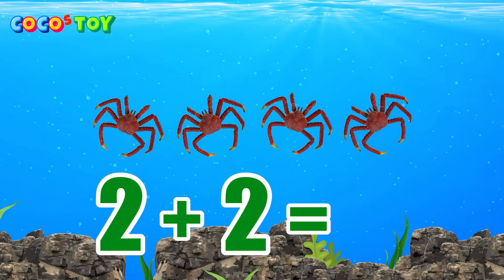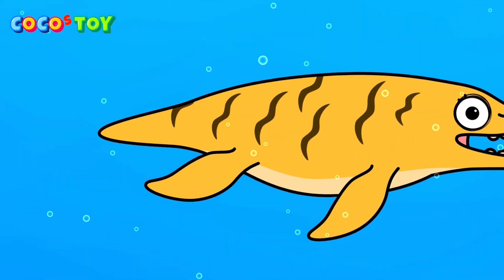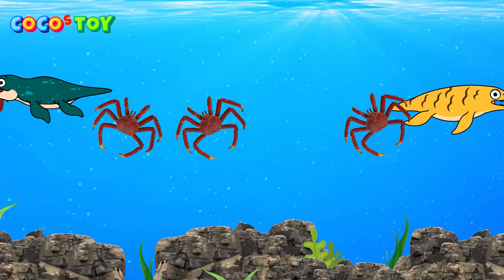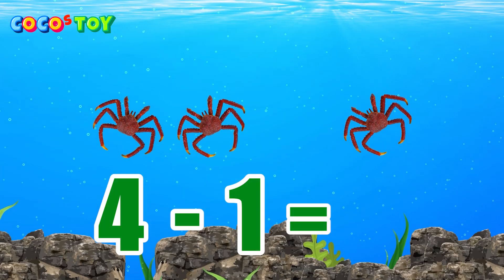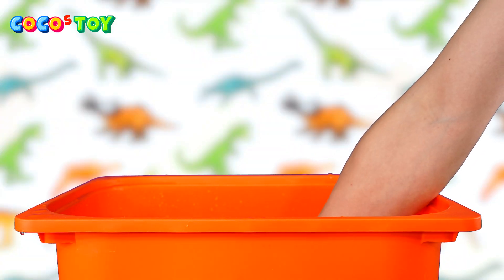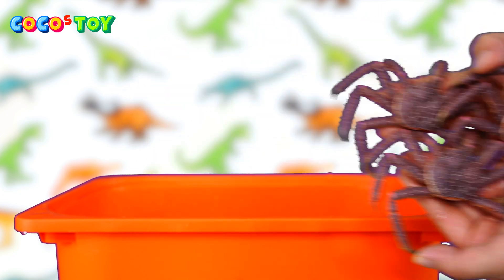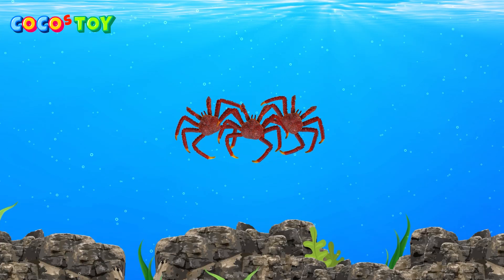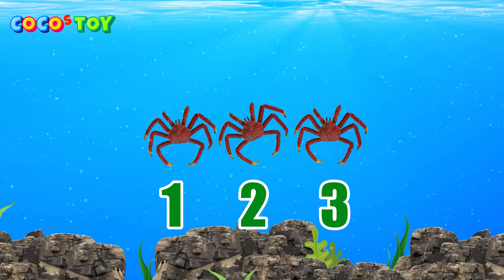Two plus two equals four. Four minus one equals three. One, two, three.